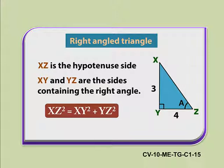XZ squared is equal to XY squared plus YZ squared. You know that we get 5 as the measure of XZ that is Hypotenuse.